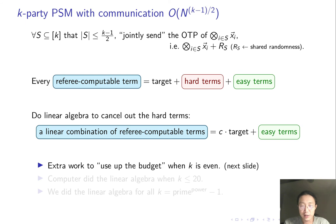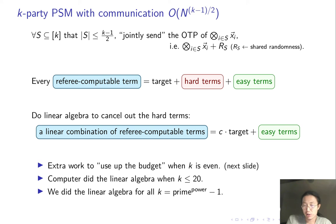When k is even, the budget is not an integer power of n, so some extra work is needed. We let the computer do the linear algebra for k up to 20, and we did the linear algebra for k equals prime power minus 1. We conjectured that our method should work for any k.